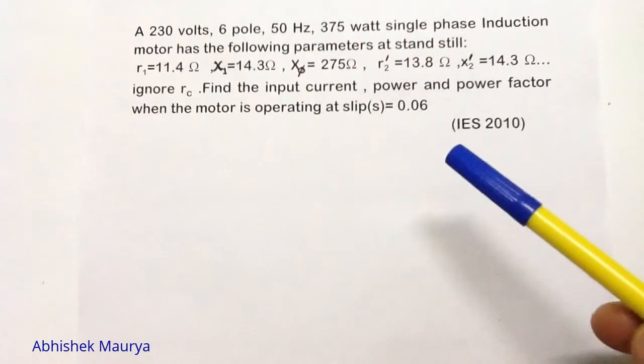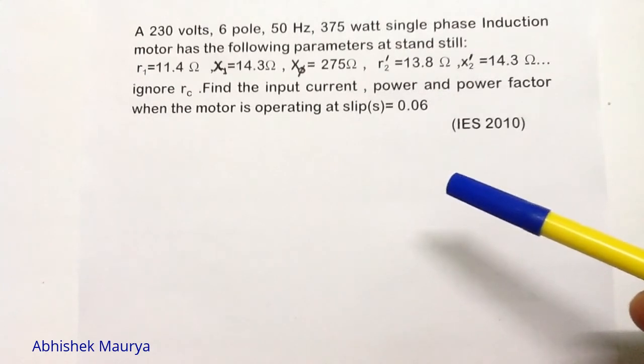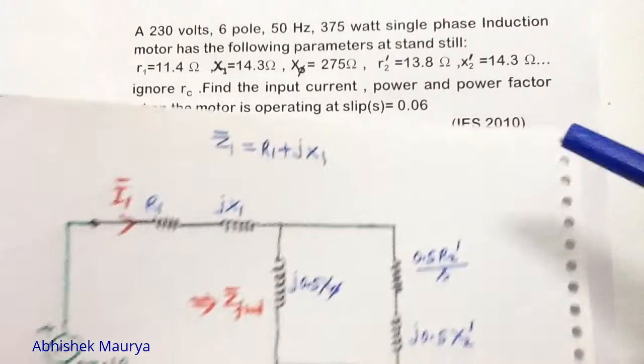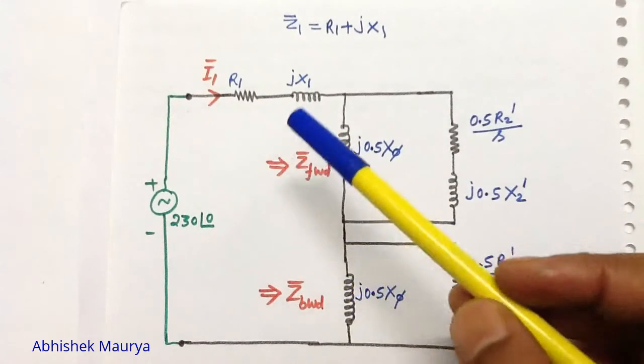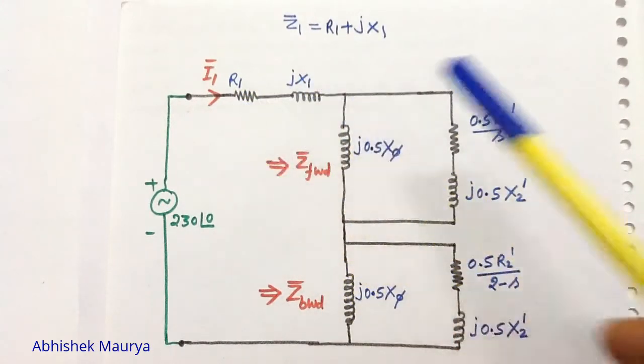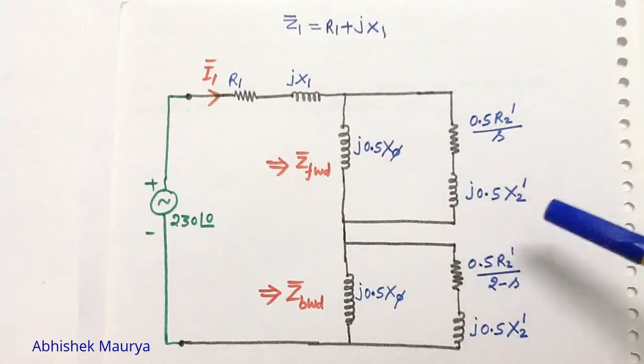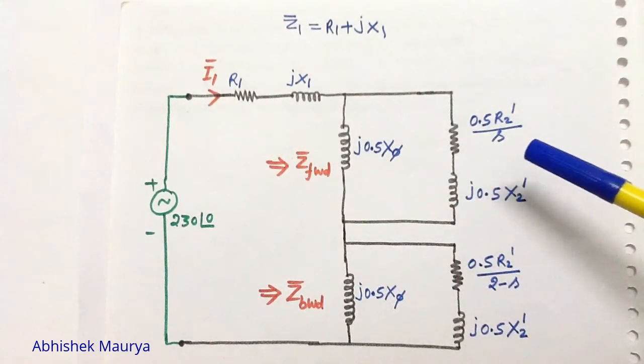To solve this problem, first we will draw the equivalent circuit of single phase induction motor. You can see in the question that the values of R1, X1, X5, R2 dash, X2 dash, and the value of slip are given to us.